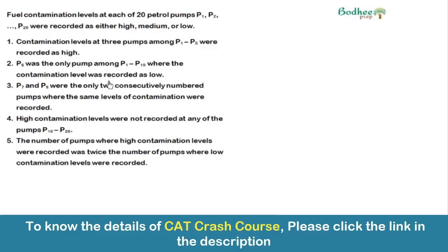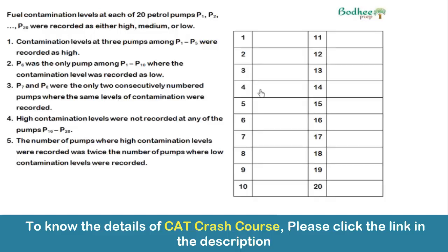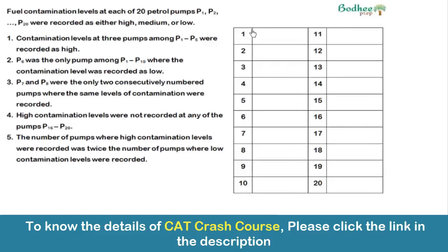This is a set from CAT 2018, rated as moderate to easy. The case states that fuel contamination levels at each of 20 petrol pumps P1 to P20 were recorded as either high, medium, or low. By reading the conditions, we need to assign the contamination level — H for high, M for medium, L for low — to each of the 20 pumps by completing the given table.